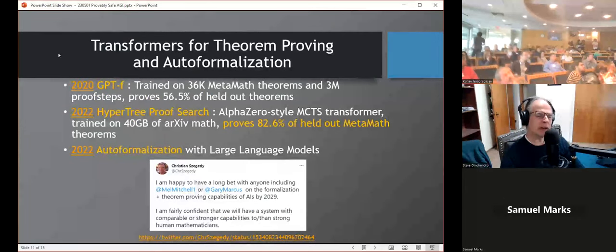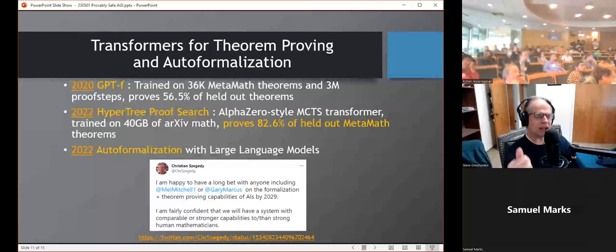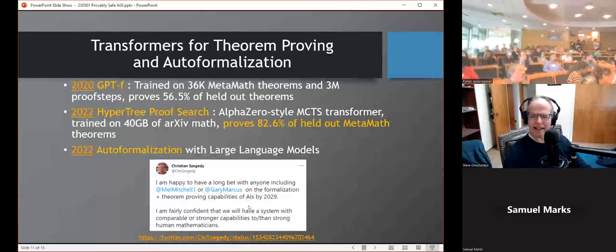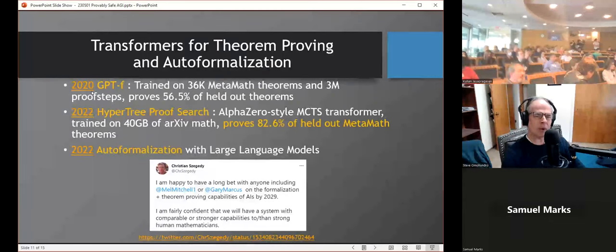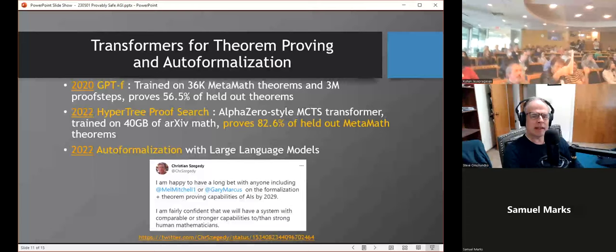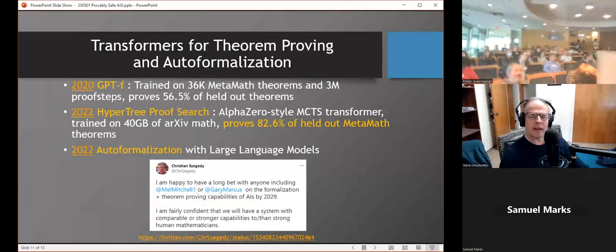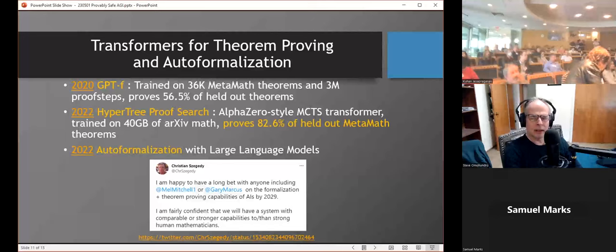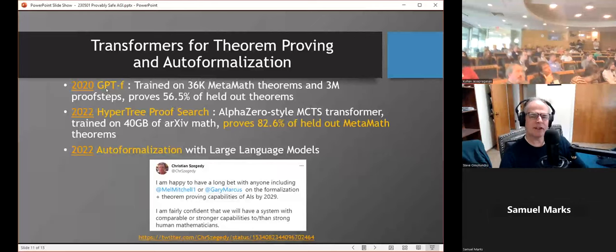The work on transformers for theorem proving and auto-formalization is, you'd really like to take existing math textbooks written in English and have a language model convert that into a formal system. And they're actually getting very good at it. Christian Szegedy at Google, who's one of the forces behind that, is willing to take bets that these auto-formalization systems will be better than human mathematicians by 2029. In 2020, OpenAI released GPTF, F for formal, and they proved a bunch of Metamath theorems quite well. In 2022, Meta has a group in France that did what they call the HyperTree proof search. It's an AlphaZero-style transformer system, and it can prove 82% of Metamath theorems. So they're getting very close to being able to do the kind of simple theorems there.